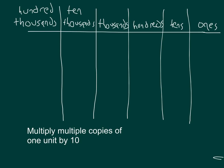So, for instance, if we have 10 times three ten thousands. If we were to model 10 times three ten thousands, then we will look at three ten thousands first by placing three place value disks within the ten thousands place.